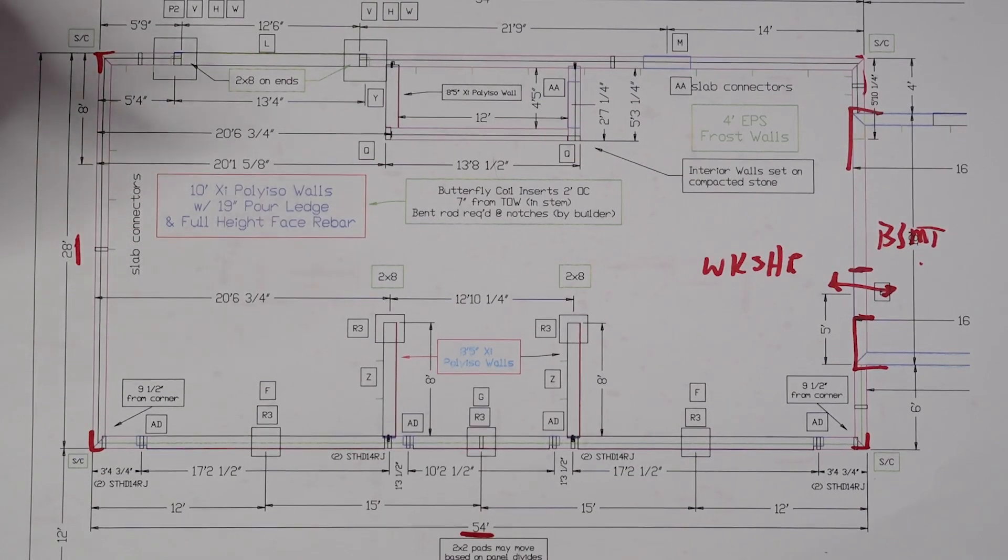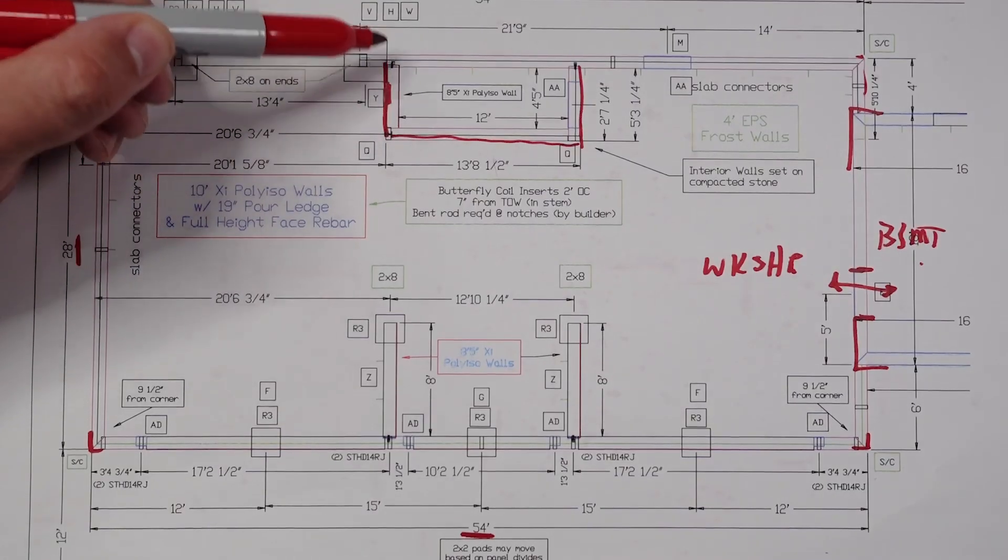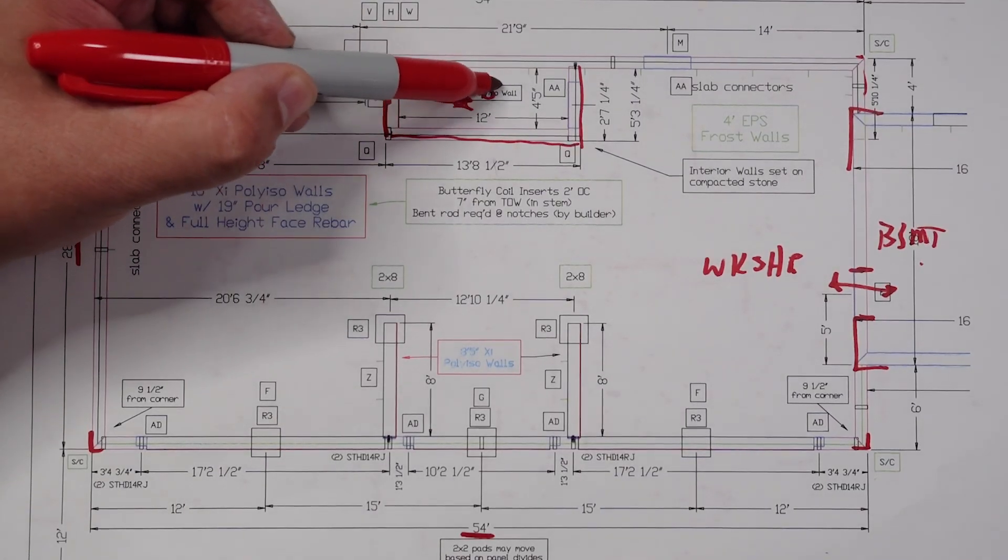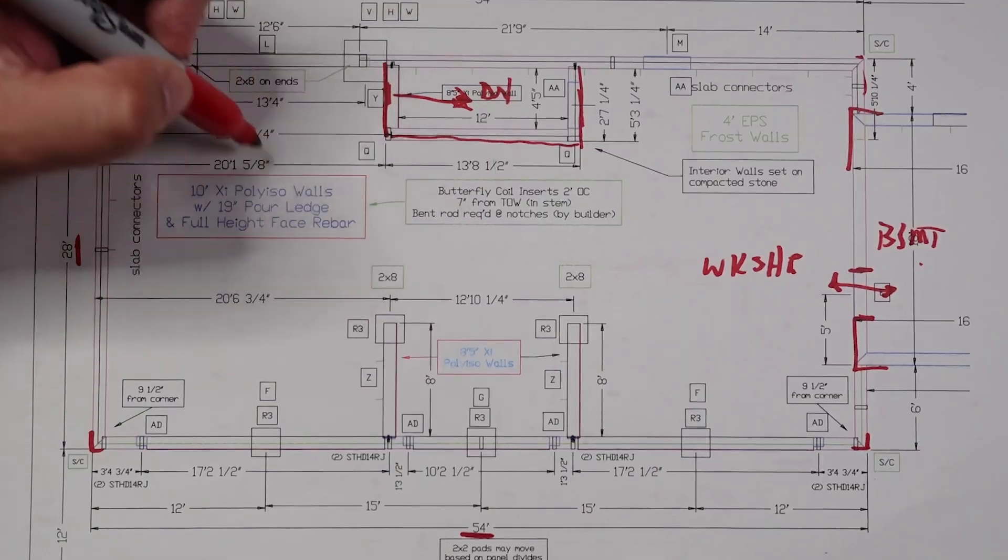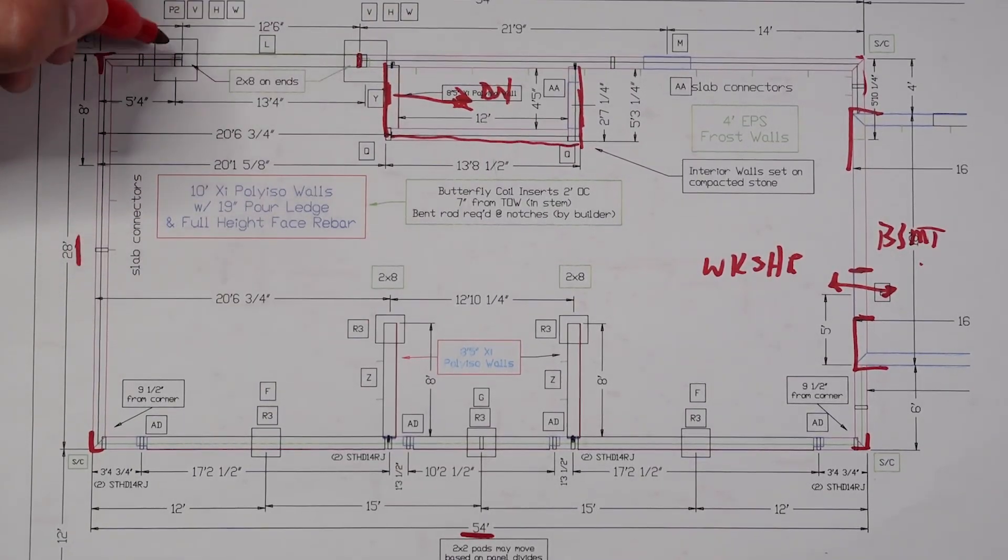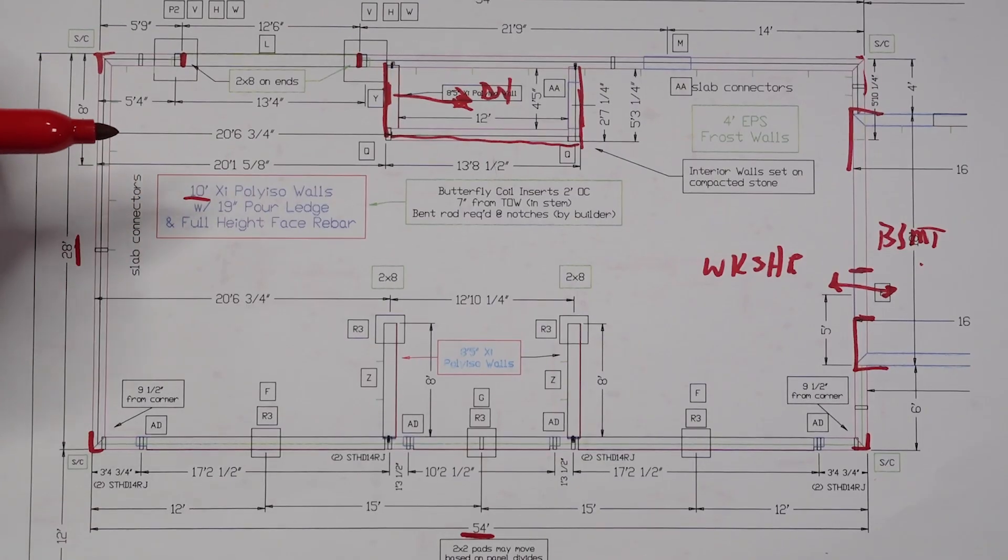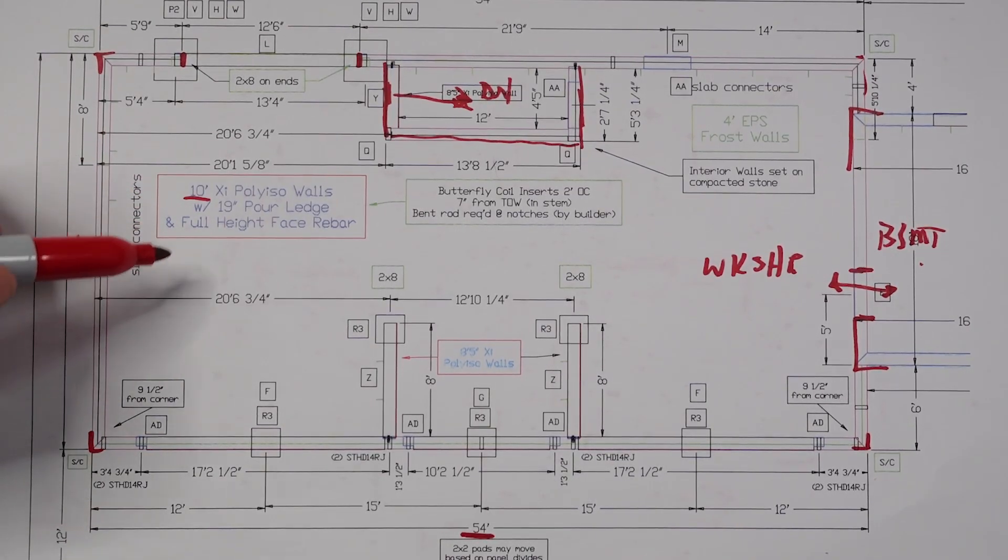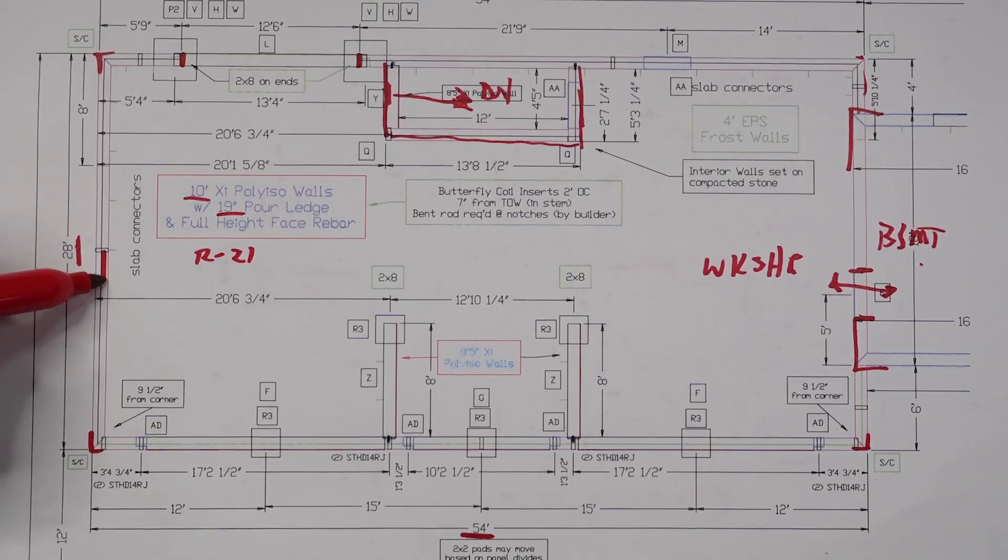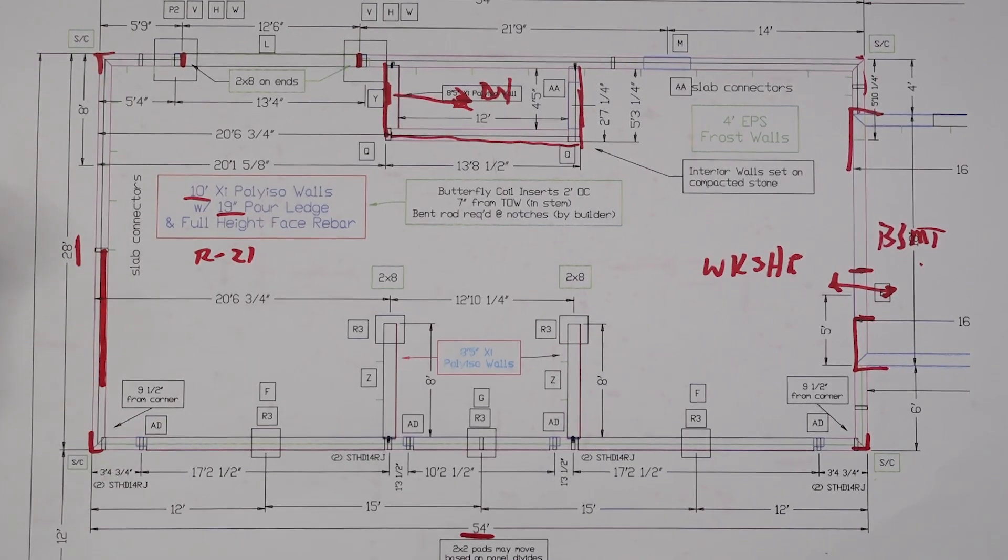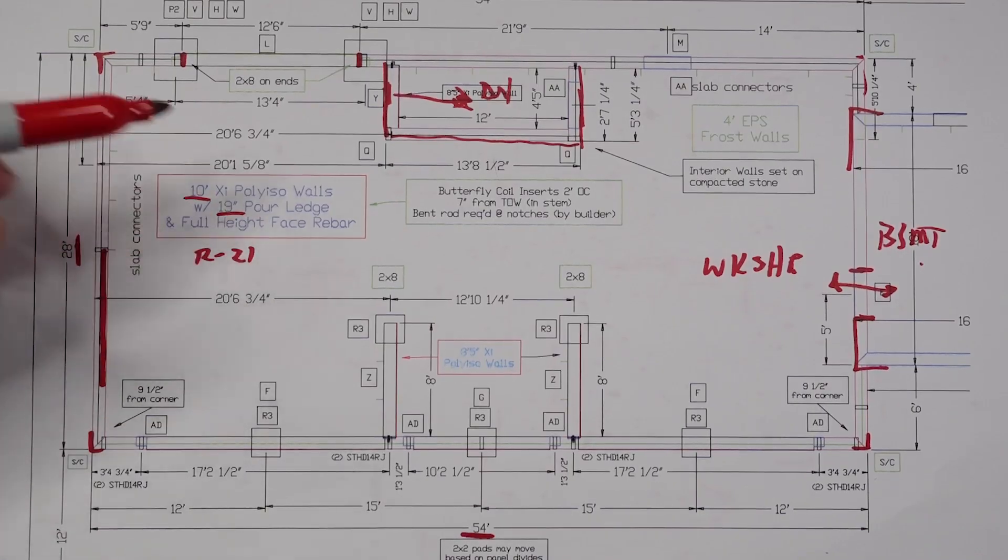Now, a couple of things that we had to do in there is we developed a stairwell because we wanted to be able to walk from the workshop and go down and have a doorway there so that we could get to and from the garage above down to the workshop without having to go outside and go around. We do have a big door here where it's an actual roll-up door. You can see here the note. We have our 10-foot X1 walls, which I believe there are 21 already insulated.